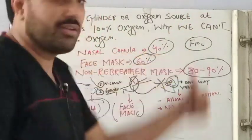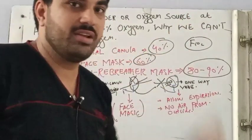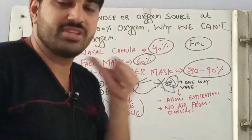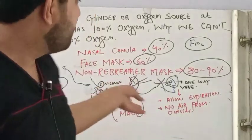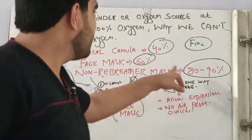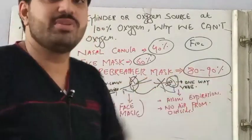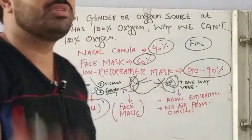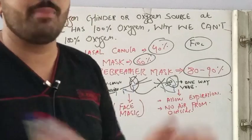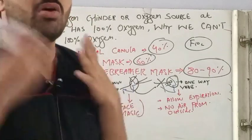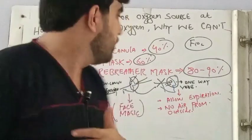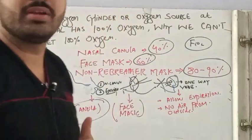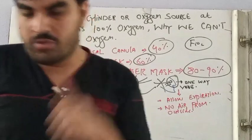The amounts of oxygen deliverable with each device I already discussed in my previous lecture. If the person is not maintaining their oxygen saturation with the non-rebreather mask, the next step is CPAP, BiPAP, or a ventilator. Thank you for watching.